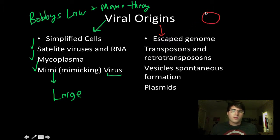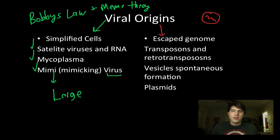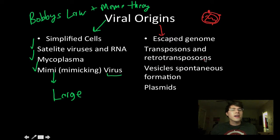The escaped genome hypothesis proposes that we have vesicles and genomes moving in and about cells. It's not too crazy to think that at some point a vesicle with a genome inside started making proteins, encapsulating itself, and then acquiring glycoproteins — and voila, you have a virus. We can see examples of this in transposons and retrotransposons, which code for things seen in many viral genomes.